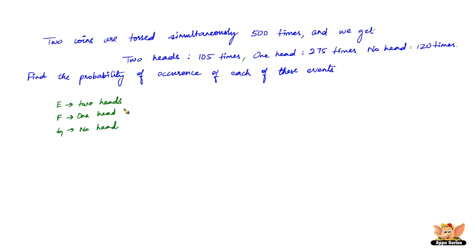As we know from the previous problem, the probability of event E — that is 2 heads — is the number of 2-head outcomes divided by the total number of trials. That is 105 divided by 500, which gives us 0.21. So the probability of event E is 0.21.